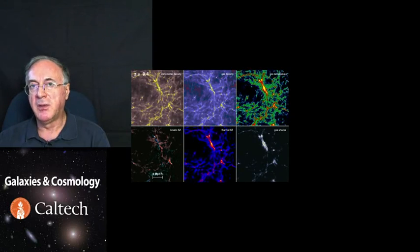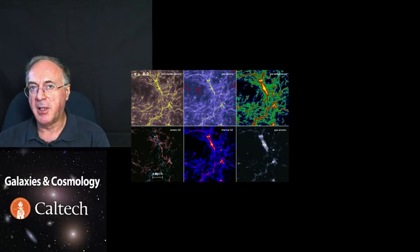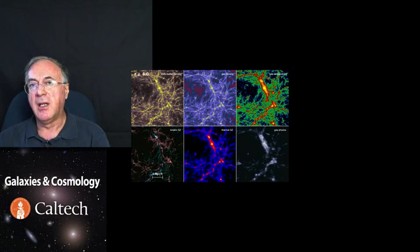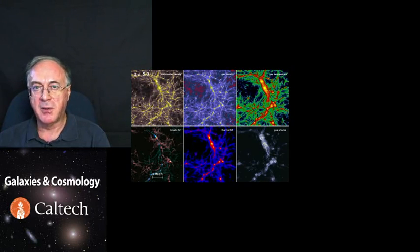The different panels show different components: the density of the dark matter, the density of baryons or gas, the temperature, shock waves, and predictions for Sunyaev-Zel'dovich effect.